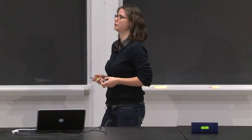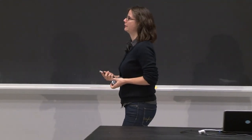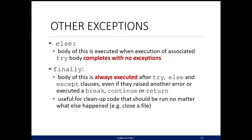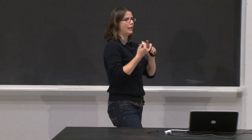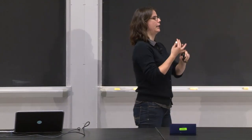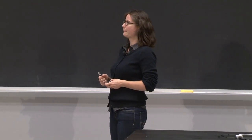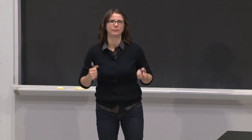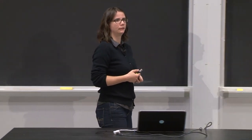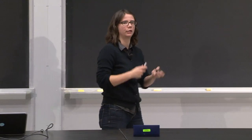There are other blocks you can add to exception handling. An else block gets executed when the code in the try block finishes without raising an error. A finally block is always executed — whether the try block finished without error, raised an exception, or went through the else — and is usually used to clean up code, like printing that the program finished or closing a file.